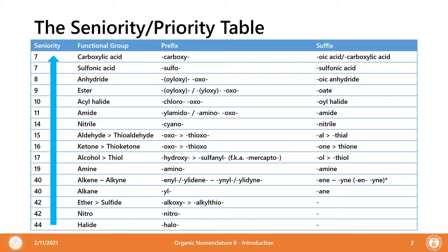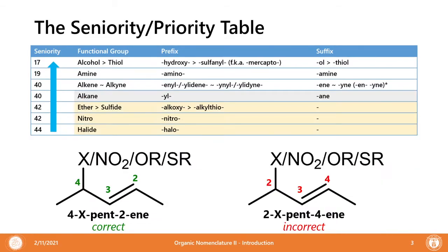This is a preview of the complete seniority or priority table, and almost all of the functional groups in this priority table will be discussed in this video series. We will be discussing the groups in the lower half of the table — primarily the nitro, halide, ether, and sulfide functional groups, which are below the alkane priority, and the alcohol, thial, and amine groups, which are above the alkane, alkene, and alkyne priority.